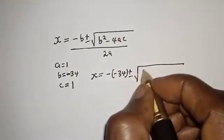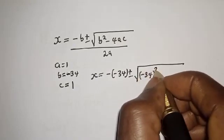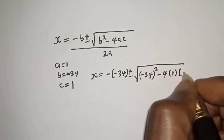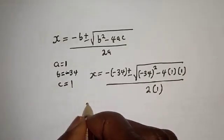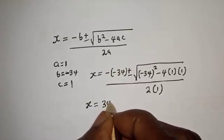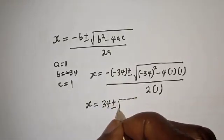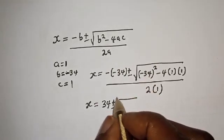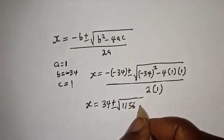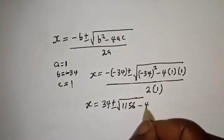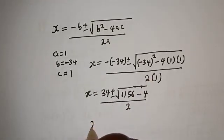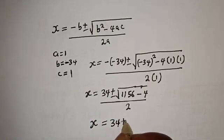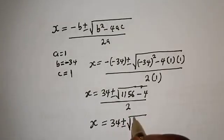So s equals negative bracket negative 34 plus or minus square root of negative 34 squared minus 4 times 1 times 1, over 2 times 1. That gives s equals 34 plus or minus square root of 1156 minus 4, which is square root of 1152, over 2.